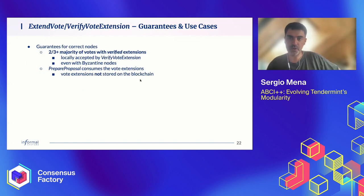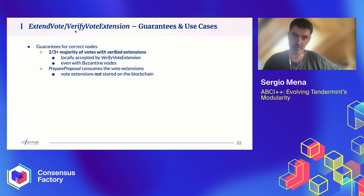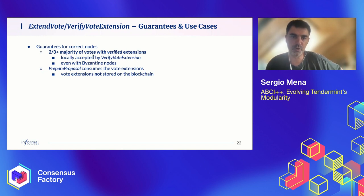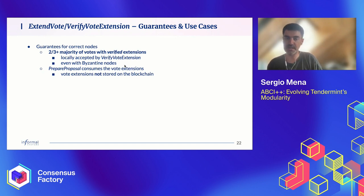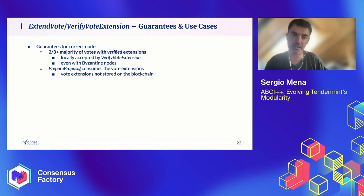Before getting to use cases for ExtendVote and VerifyVoteExtension, let me remind you of the guarantees. This is not agreement-level consensus — it's weaker. For correct nodes in Tendermint, a two-thirds majority of votes will be present at the end of one consensus height with a verified extension, verified by the local node. This is our way to filter out Byzantine nodes. At the end of a consensus, you'll have all votes needed to decide, each extended in a valid way. This information is made available at PrepareProposal of the next consensus height. As a side note, extensions are not part of the blockchain — they are ephemeral information created at the end of one consensus height to be consumed at the beginning of the next.